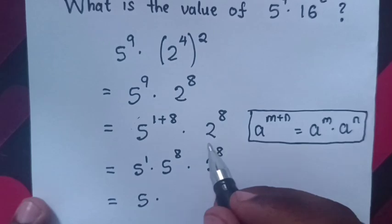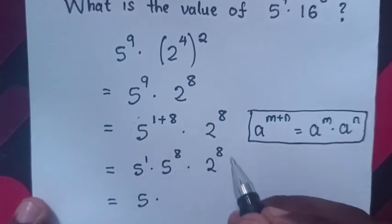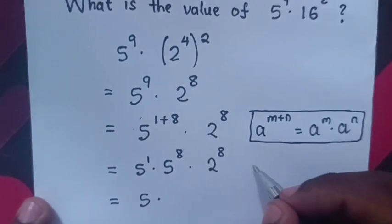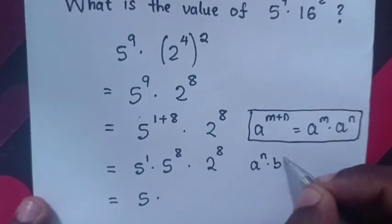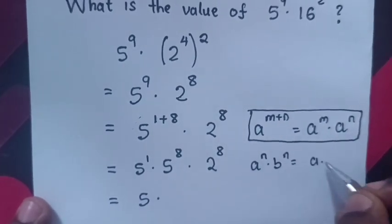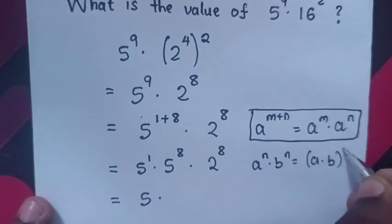Now from here, this is multiplication of same powers but different bases. So we will apply exponential rule that a^n times b^n is equal to (a times b)^n.